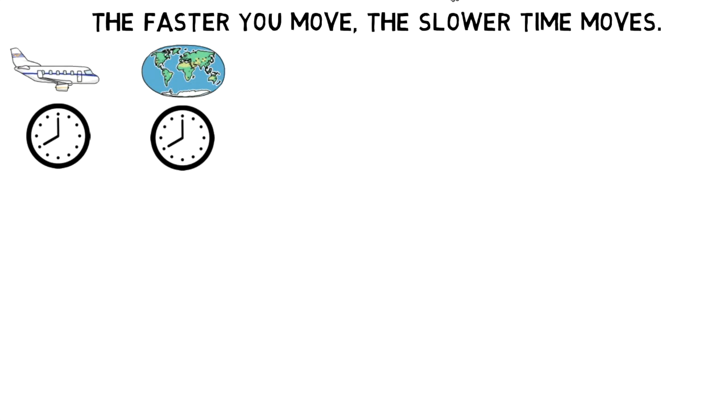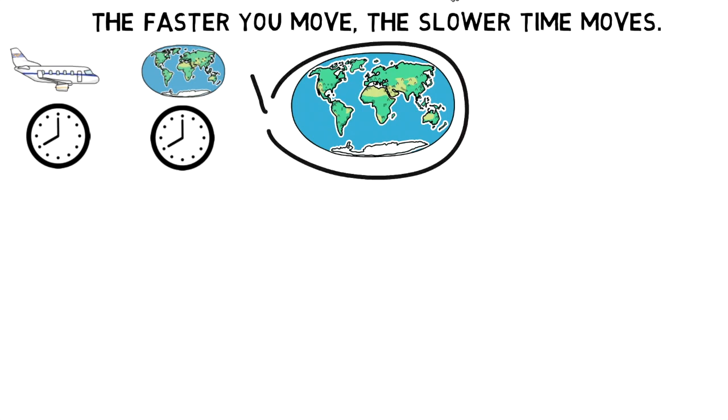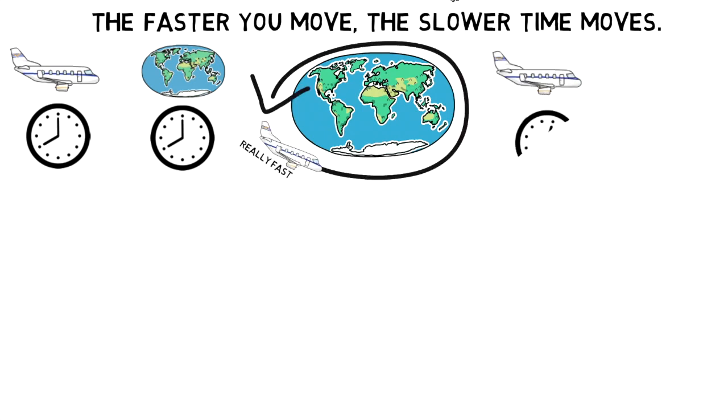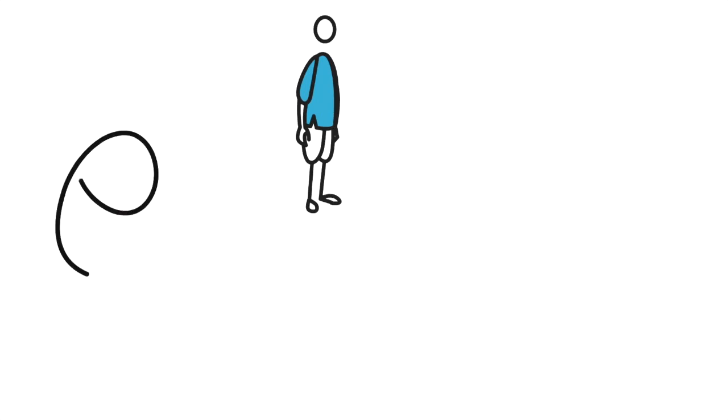Scientists have done experiments to show this. For example, there were two accurate clocks set to the exact same time. One clock stayed on Earth while the other flew in an airplane. After flying around the world really fast, scientists compared the two clocks. The clock on the airplane was slightly behind the clock on the ground. So time had slowed down for the people on the airplane compared to the people on Earth.